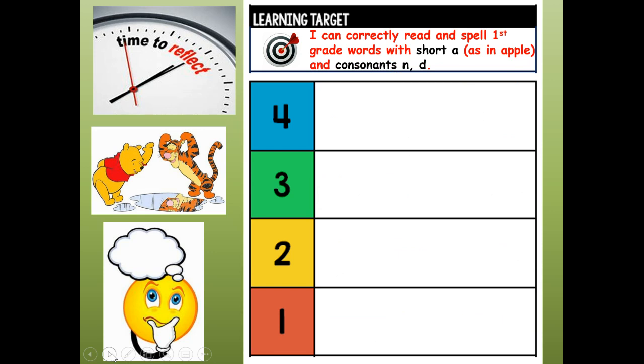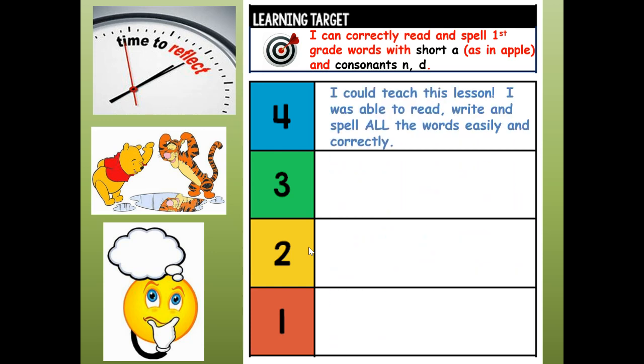All right. Now, on the top of your paper, I want you to reflect. It says time to reflect in the corner here and you see Pooh and Tigger. They are looking at their reflection. They are looking at themselves. And there's the emoji down here thinking, how did you do in this lesson today? Our learning target was I can correctly read and spell first grade words with short A, apple, and consonants N, D. Would you give yourself a four? I could teach this lesson. I was able to read, write, and spell all the words easily and correctly. Three. I was able to read, write, and spell most of the words correctly, which means it was pretty easy, but I still needed a little help.